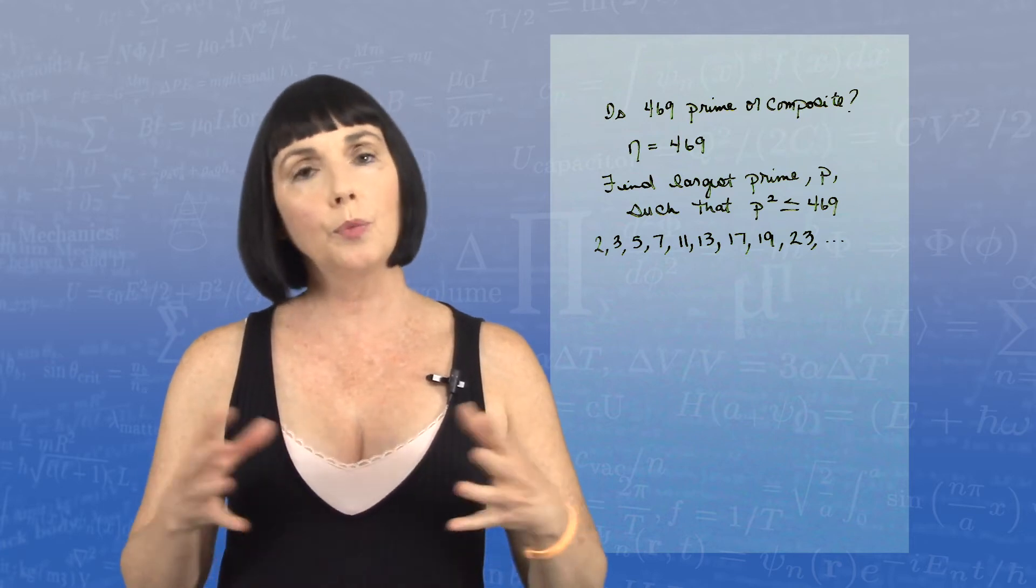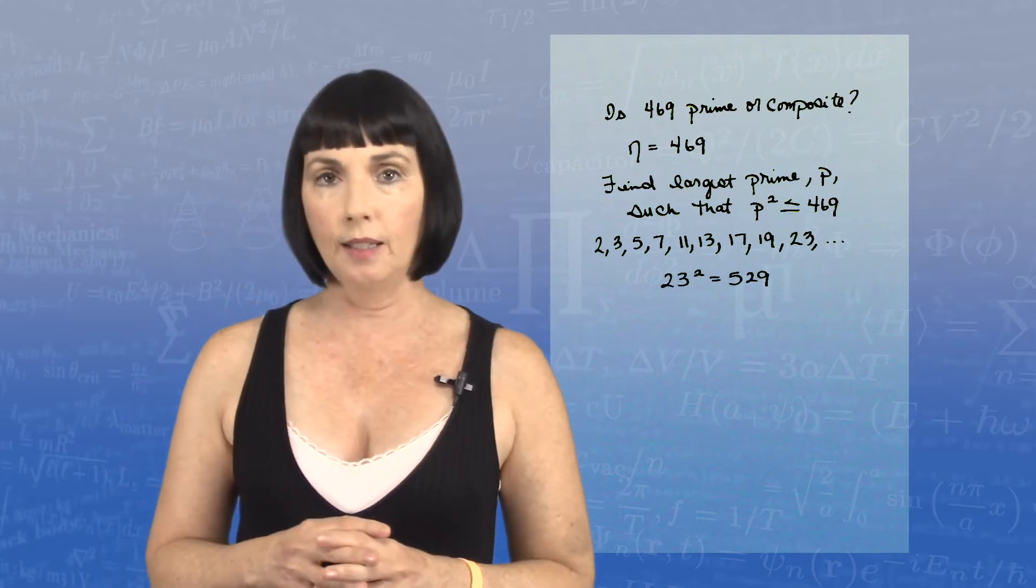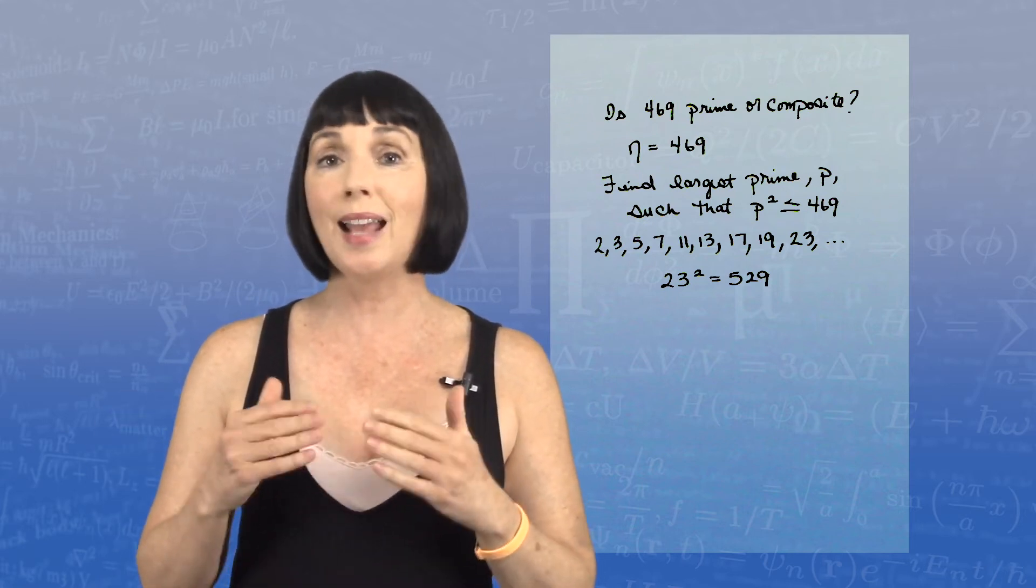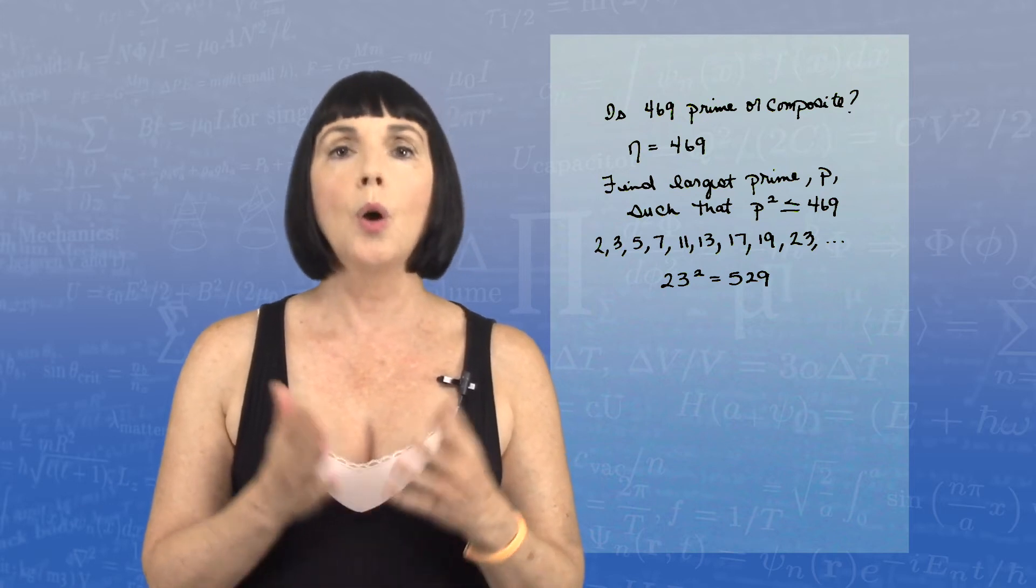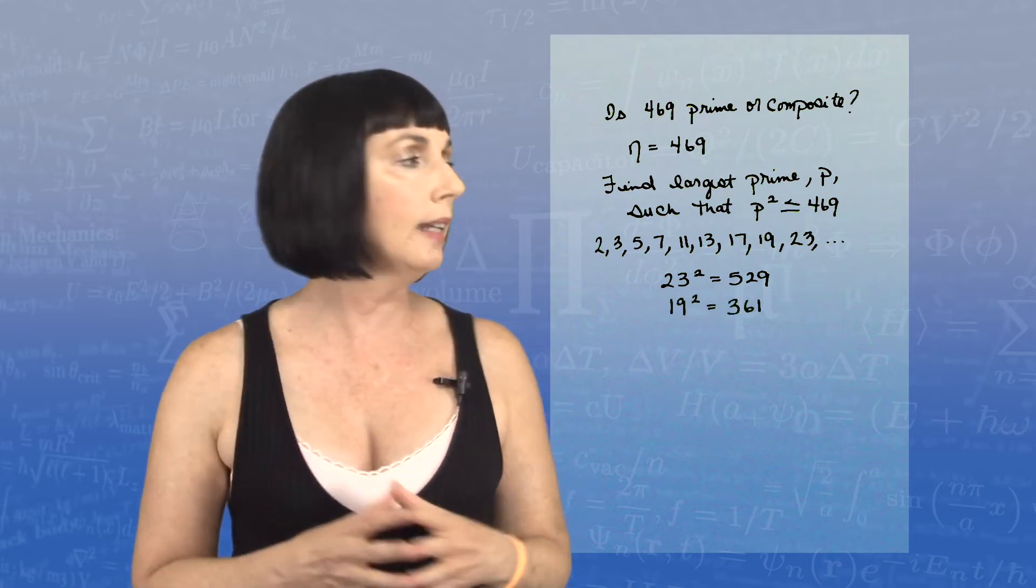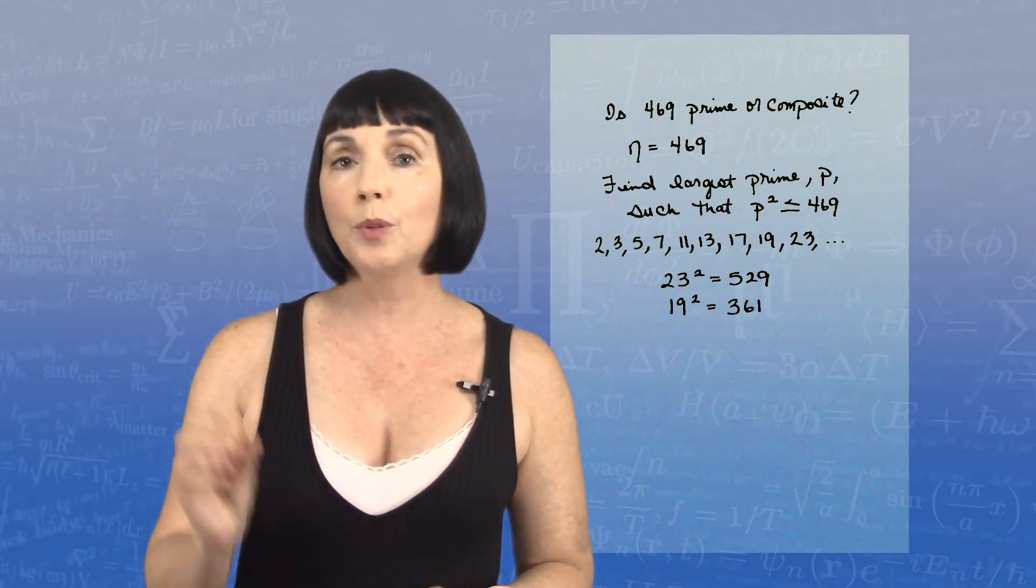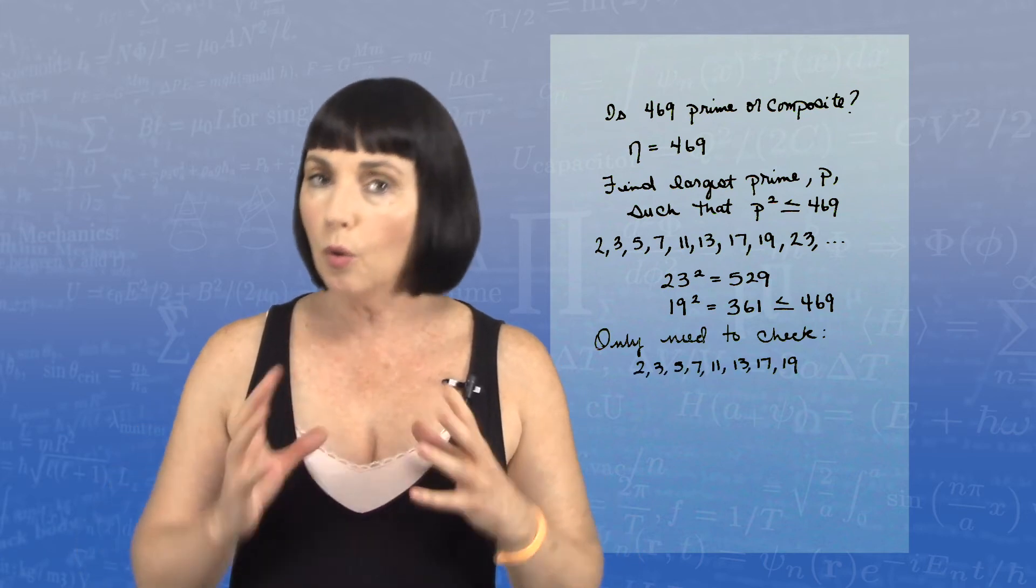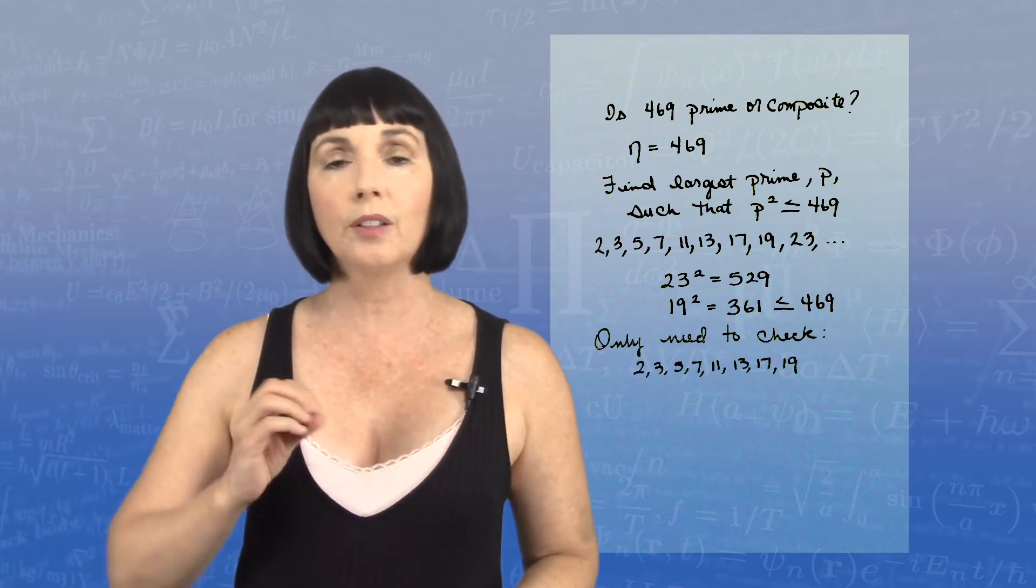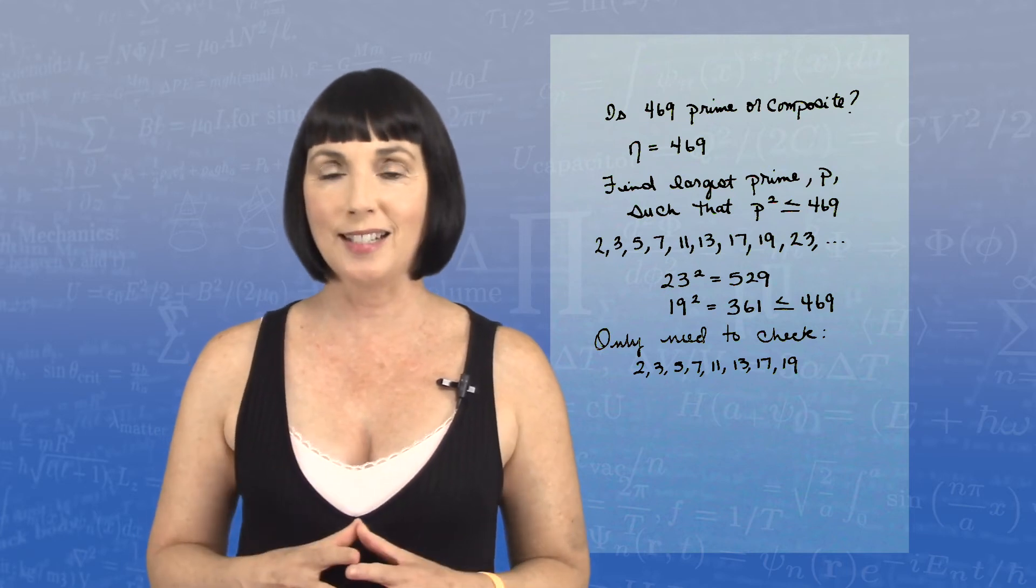So let's start with 23. 23 squared is 529. Now that's larger than my number, so I don't have to go that high. So we go down to the prime number next to it. What is 19 squared? That is 361. Now that's less than or equal to my number 469. That means that I only have to check the prime numbers that are less than or equal to 19 to see if they're factors of 469.